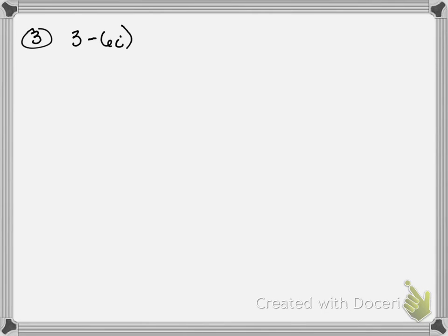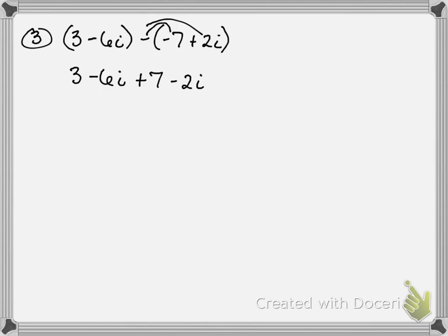Look right here, 3 minus 6i — this is number 3. So like we said, this negative gets distributed, and then we combine our like terms. So 3 and 7 are my like terms, that's 10, negative 8i.